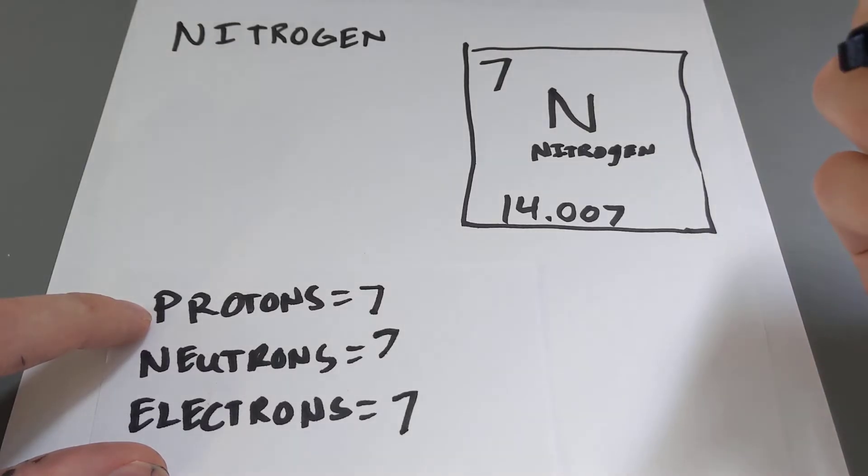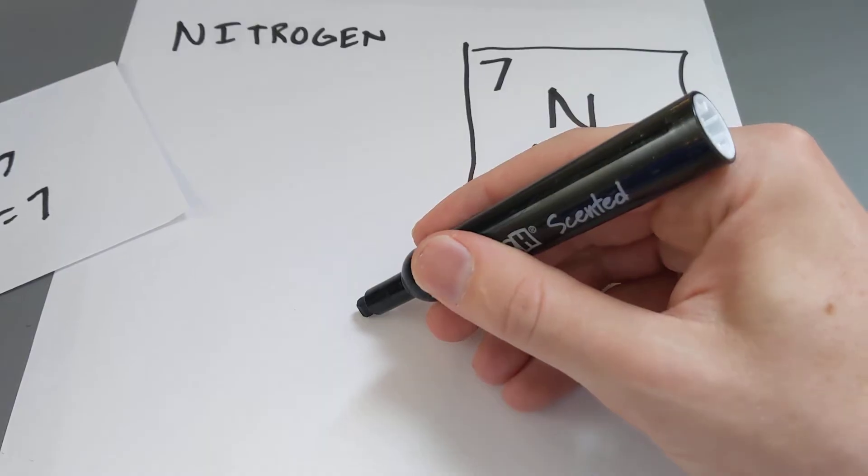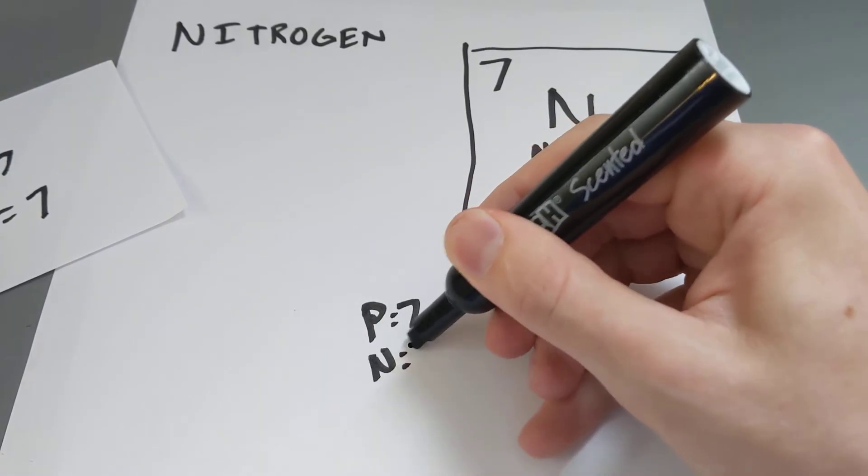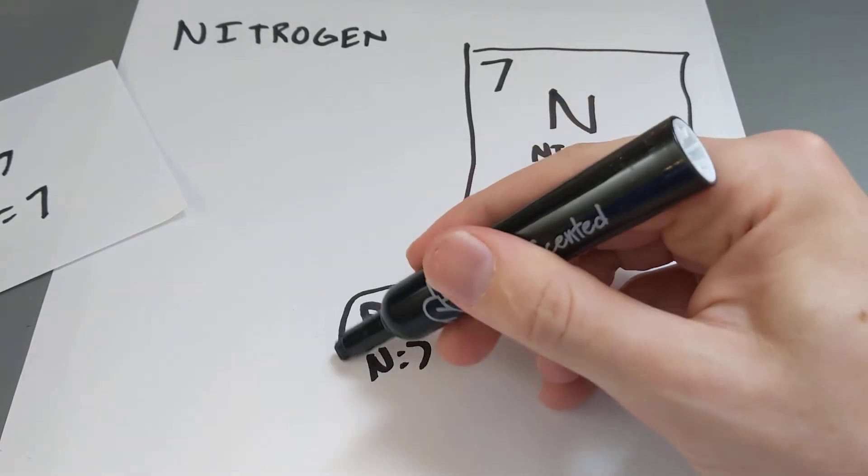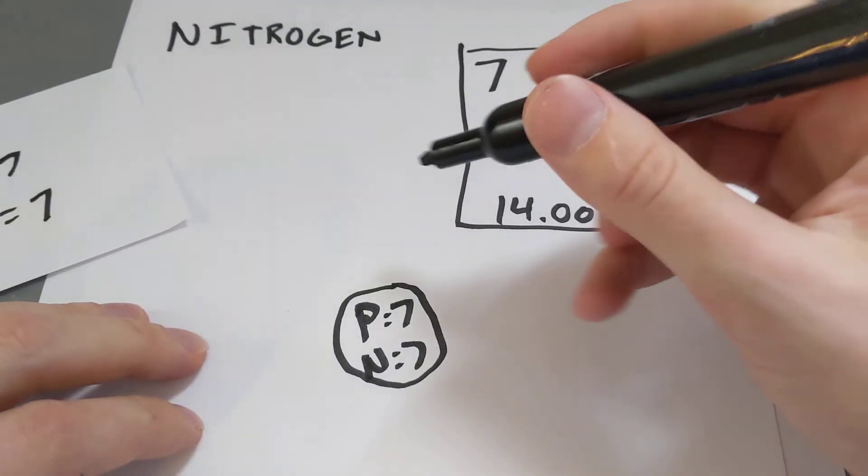So, to draw the diagram, we're going to start off with the nucleus. In the middle, we're going to put, for a simplified diagram, P7 and N7 for protons and neutrons. I'll show you a different way to do it a little bit later. So, we have the nucleus, now we need the electrons.